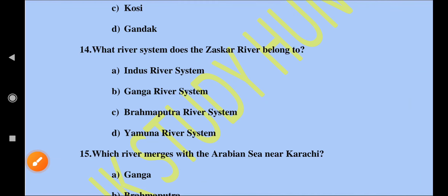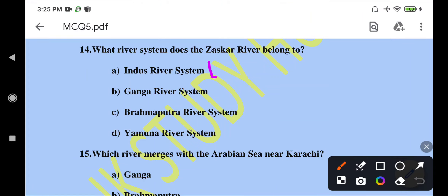Which river system does the Zaskar River belong to? The Zaskar River belongs to the Indus River System and is a major tributary of the Indus River System. The Zaskar River originates from the Zaskar Range and is a tributary of the Indus River. So the option is correct.